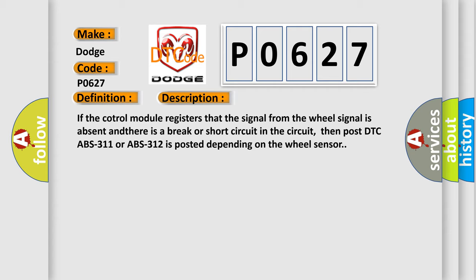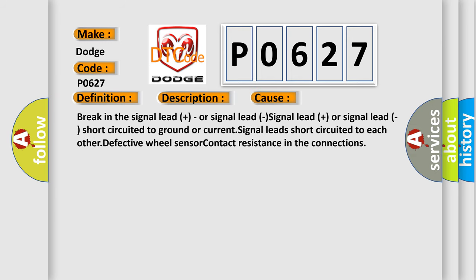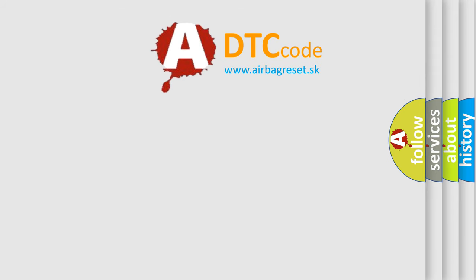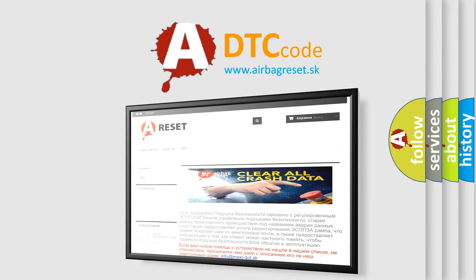This diagnostic error occurs most often in these cases: Break in the signal lead plus or signal lead, signal lead plus or signal lead short circuited to ground or current, signal leads short circuited to each other, defective wheel sensor, contact resistance in the connections. The airbag reset website aims to provide information in 52 languages. Thank you for your attention and stay tuned for the next video. Bye.